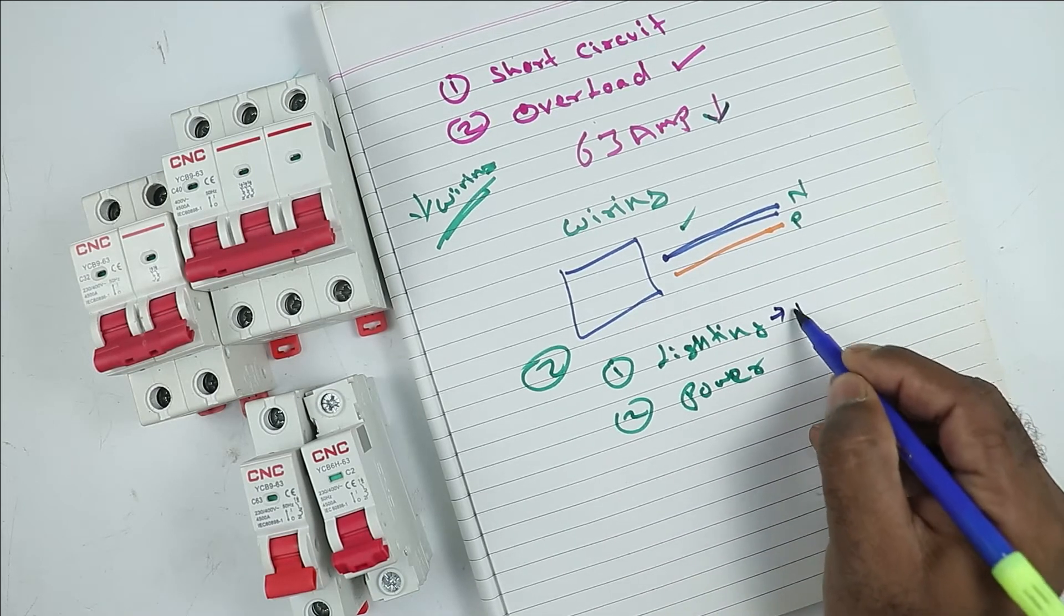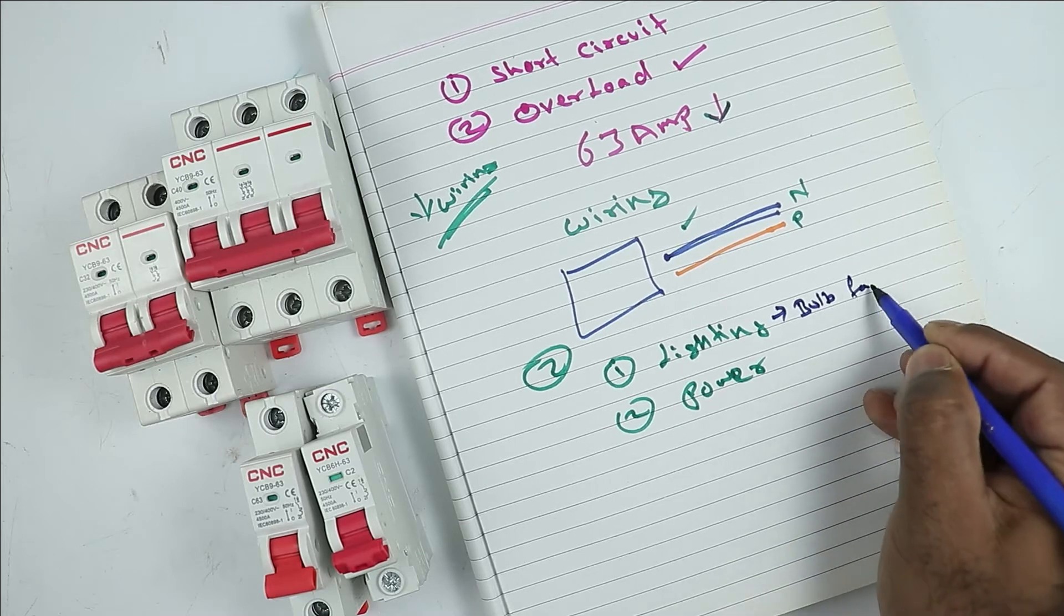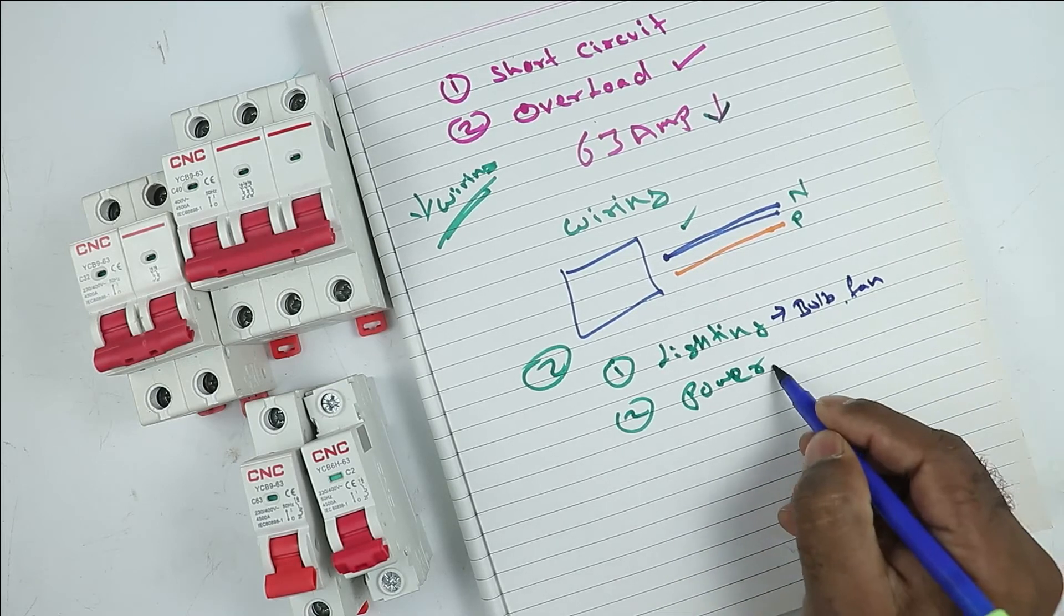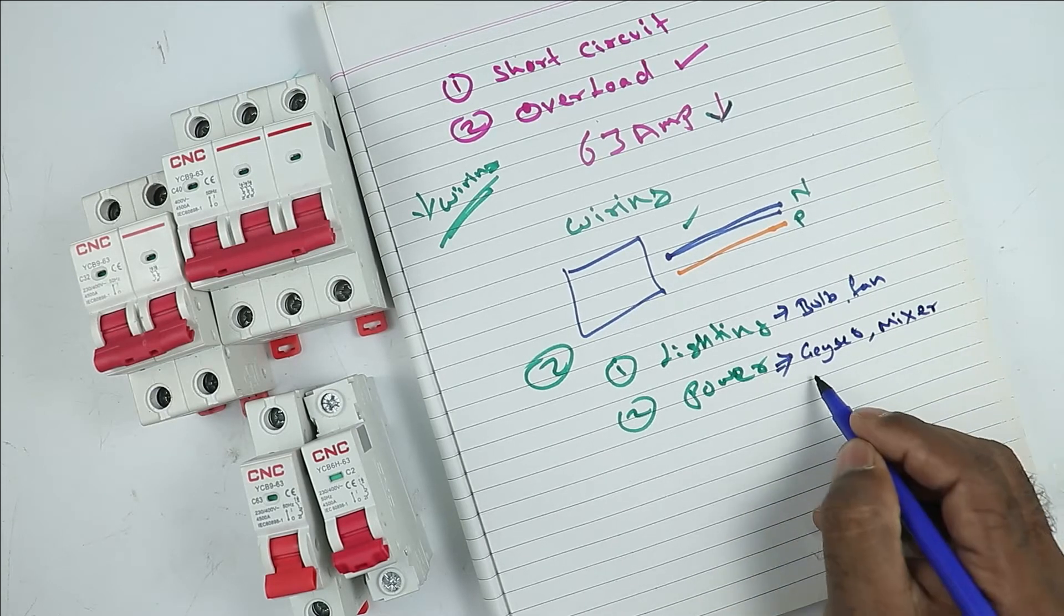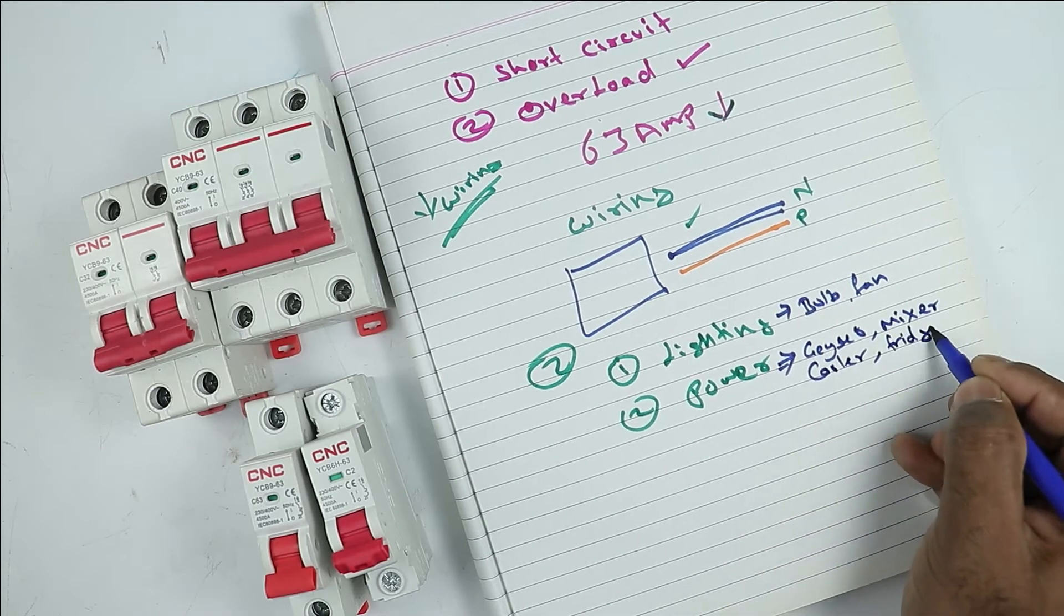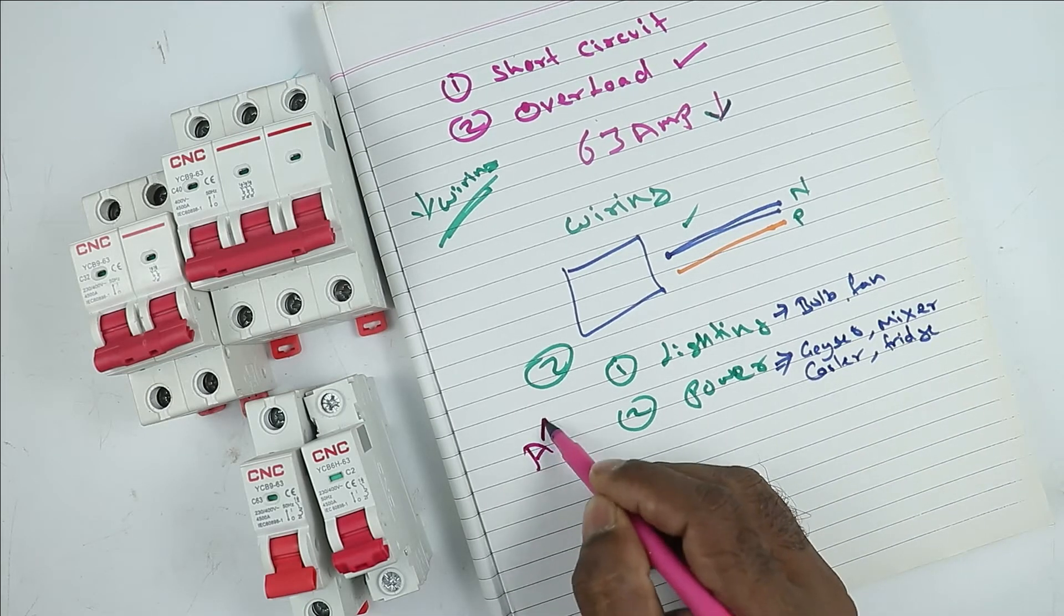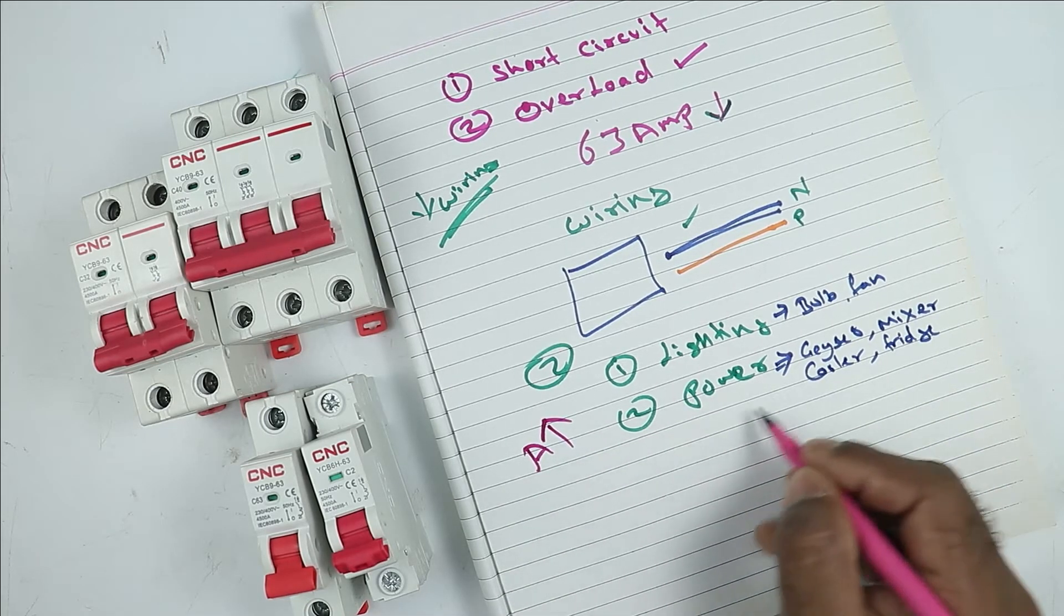In lighting one, we connect bulb or fan used in our home. In power or load one, we consider geyser, mixer grinder, along with this, cooler, refrigerator. I mean all those appliances through which heavy current flows, we call these as power load.